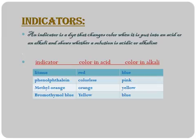An indicator is a dye that changes color when it is put into an acidic or an alkaline solution, and shows whether a solution is acidic or alkaline. Indicators help to know whether a solution is alkaline or acidic. There are different indicators that give different colors in acid and alkaline solutions. The indicators are: litmus, phenolphthalein, methyl orange, and bromothymol blue. In acid, litmus shows red color.